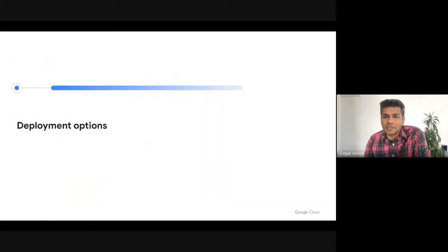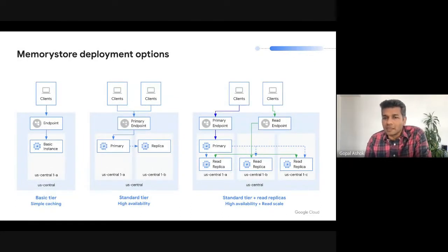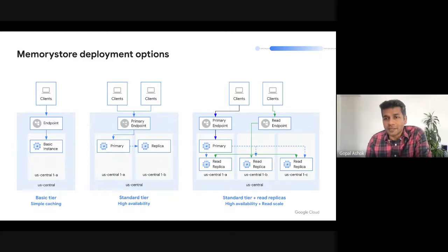Now that you know some of the key capabilities, let's look at how to optimally run Memorystore for Redis for your most critical applications. Let's start with deployment options. Depending on the scale, availability, and cost requirements of your application, you can choose from three different deployment options. For use cases like simple caching where loss of cache can be tolerated, the basic tier provides a very cost-effective solution. With basic tier, you get a single node Redis instance. The key thing to understand is that basic instances do not have an available SLA and can experience minutes of downtime and complete loss of keys in case of failures. So your application must be able to tolerate the cache being unavailable for a long period of time if you are using basic tier instances.